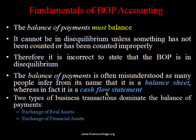There are two types of transactions recorded in balance of payment. The first is related to the exchange of real assets, which are tangible — things we can touch. The second is exchange of financial assets, which are monetary claims like securities and bonds.